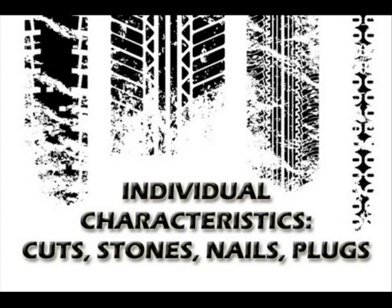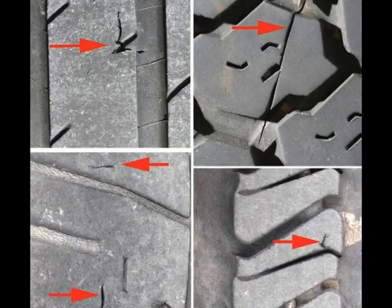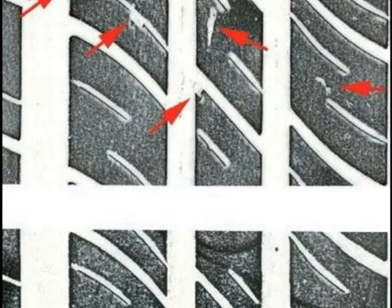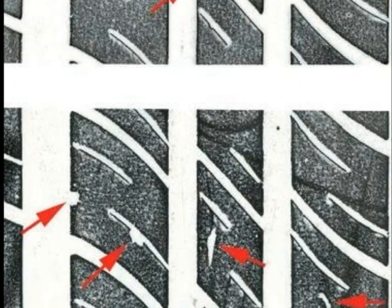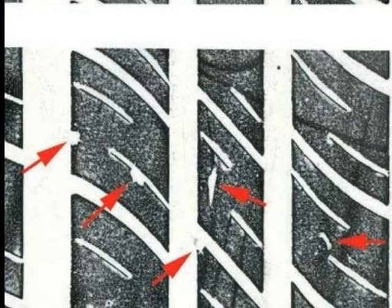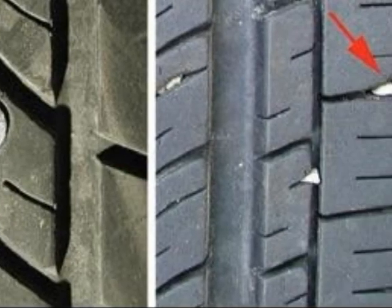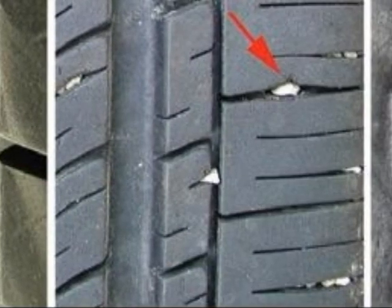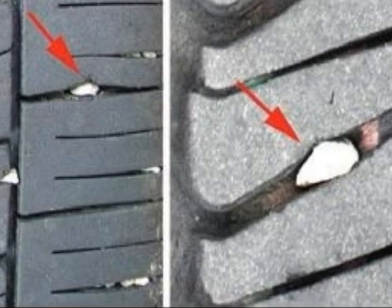Individual Characteristics: Cuts, Stones, Nails, and Plugs. Cuts and marks on tire treads can be translated onto impressions. Tire wear and damage can be preserved even after thousands of miles of usage. Foreign objects such as stones and nails embedded into the sipes and grooves can show up as defects on a tire impression.